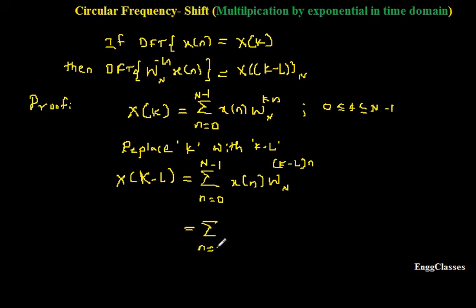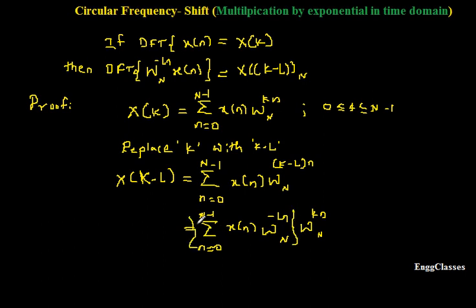Now rearranging by expanding the W term: summation n equal to 0 to N minus 1 of x[n] times W_N to the power minus Ln times W_N to the power kn. I have multiplied the terms and arranged it this way. To understand what this expression represents, compare it with the DFT of x[n]: summation n equal to 0 to N minus 1 of x[n] times W_N to the power kn, which equals X[k].